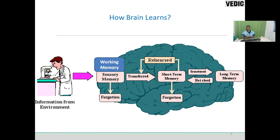Once the working memory information or content becomes overloaded, the content will start being transferred to the short-term memory biologically. No one can intervene in the content transfer from the sensory memory to the short-term memory — it is a biological process. During sleep, the content available in the short-term memory will be transferred to the long-term memory.